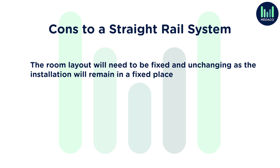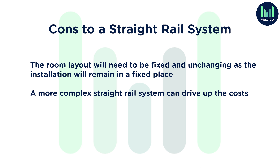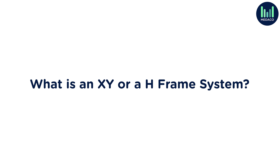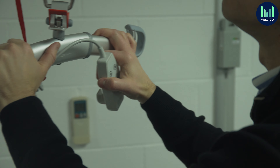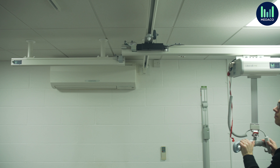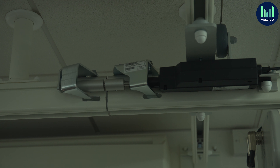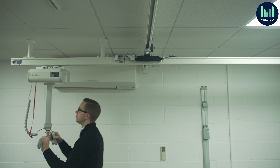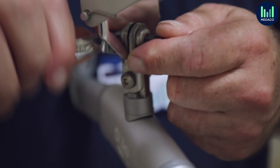With a straight rail system you can add a turntable or a switch which can give you greater coverage — for example, allowing you to connect to an ensuite or to an adjacent room. It is important to understand that the layout of your room will need to be fixed and unchanging, as the installation will remain in a fixed place. When opting for a more complex rail system that includes turntables, bends, etc., more support brackets are required, which in turn can drive up the cost.